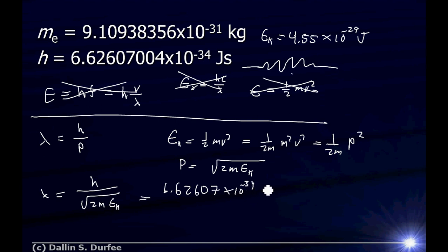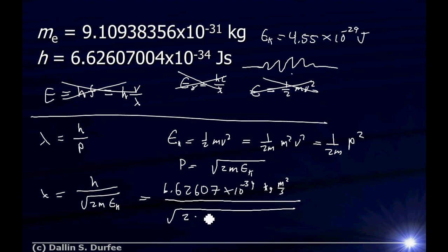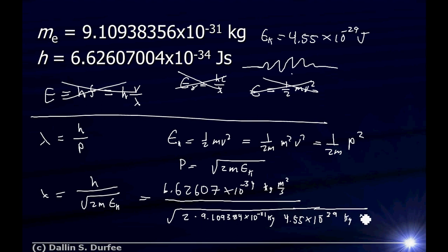A joule is a kilogram meter squared per second squared, so Planck's constant is in units of kilogram meter squared per second. In the denominator, we have the square root of 2 times the mass of the electron — 9.109384 times 10 to the negative 31 kilograms — times the kinetic energy, 4.55 times 10 to the negative 29 joules, or kilogram meter squared per second squared. The two kilograms cancel, the second squared under the square root cancels with seconds, and the meter squared under the root gives one meter — so we get units of meters, which is correct.